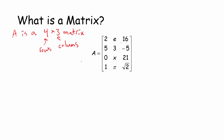We have notation to denote individual entries. For example, this three is in the second row and the second column. Pi is in the fourth row and second column. So if I call this matrix capital A and use lowercase a with subscripts: a subscript four-comma-two is the entry in the fourth row, second column, which is pi. And a subscript one-comma-three is the entry in the first row, third column, which is sixteen.